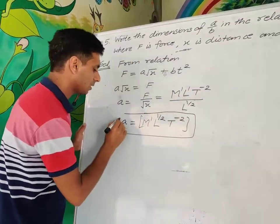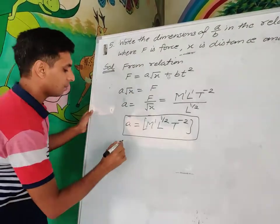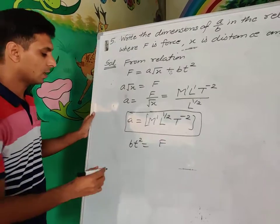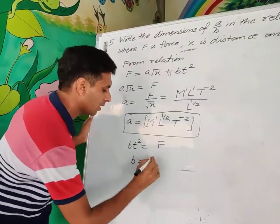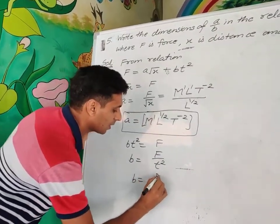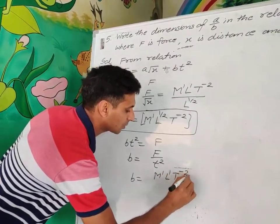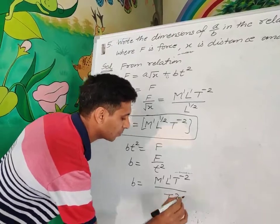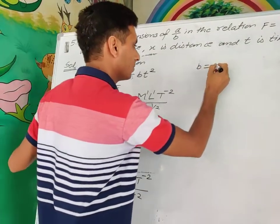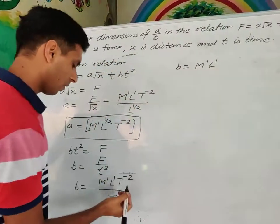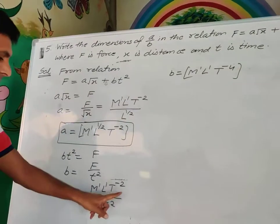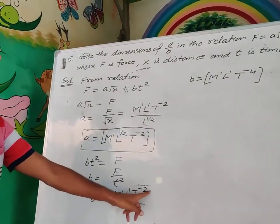For b: bt² = F, so b = F/t² = M¹L¹T⁻²/T² = M¹L¹T⁻⁴. Now computing a/b: dimensions of a are M¹L^(1/2)T⁻², dimensions of b are M¹L¹T⁻⁴.